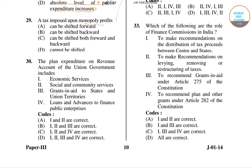In question number 29, the options are: a tax imposed on monopoly profits can be shifted forward; backward; can be shifted both forward and backward; and cannot be shifted. A tax imposed on monopoly profits cannot be shifted, because a monopolist by definition fixes the output and supply price of his product so as to get the maximum possible profit, which is given by a position where marginal cost equals marginal revenue.